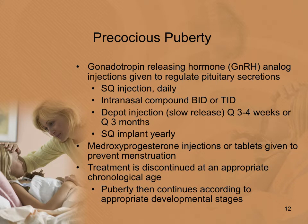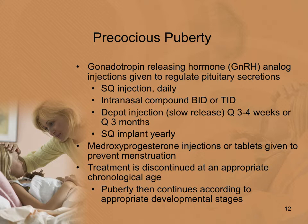For treatment of precocious puberty, the child receives gonadotropin-releasing hormone (GnRH) injections to regulate pituitary secretions. Dosing options include daily sub-Q injection, intranasal administration two to three times daily, a depot slow-release injection every three to four weeks or three months, or a subcutaneous implant done annually. Medroxyprogesterone injections or tablets can also be given to prevent periods from starting. Treatment is discontinued at an appropriate chronological age, at which point puberty will progress normally.